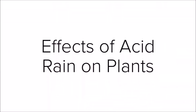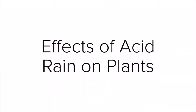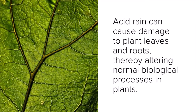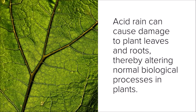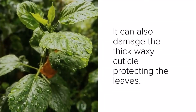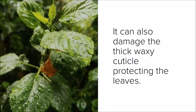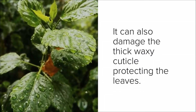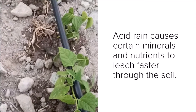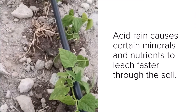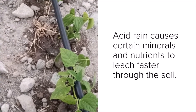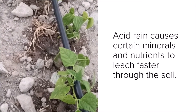Effects of acid rain on plants. Acid rain can cause damage to plant leaves and roots, thereby altering normal biological processes in plants. It can also damage the thick, waxy cuticle protecting the leaves, leaving them exposed to infections and destructive insects. Acid rain causes minerals and nutrients to leach faster through the soil, which prevents plants from getting the food they need to grow.